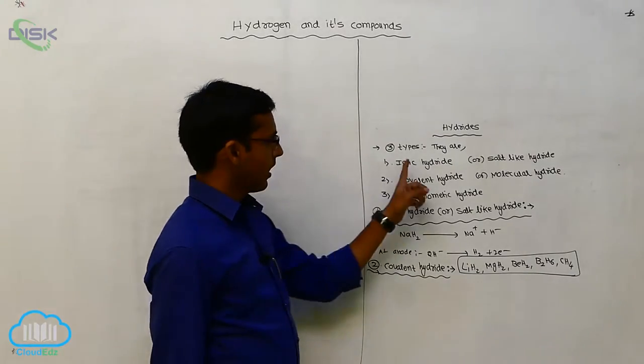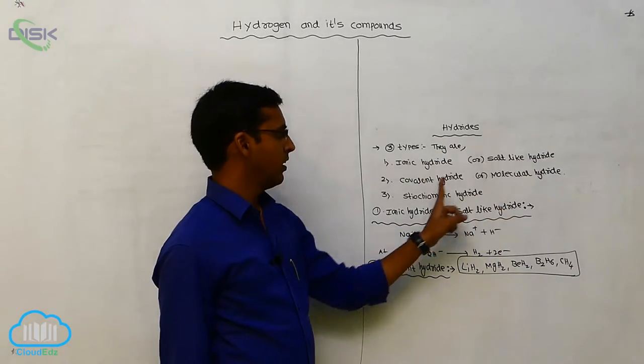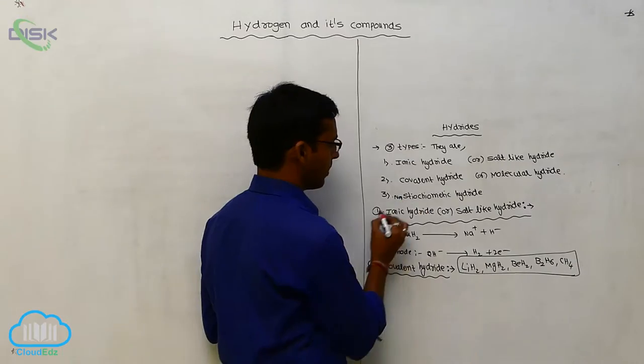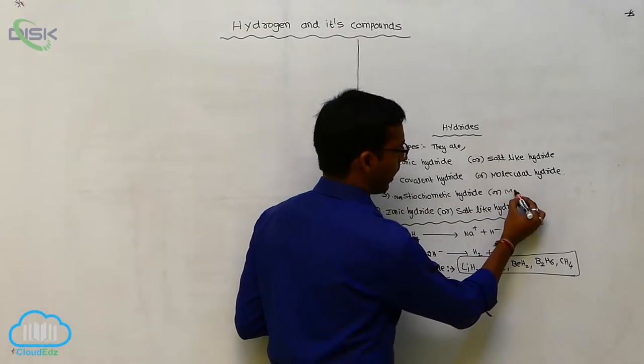The metallic hydrides are three types. One is ionic hydride, salt-like, covalent hydride or molecular hydride. And next one is stoichiometric hydride. This is nothing but non-stoichiometric hydride or metallic hydride.